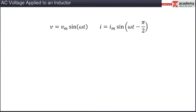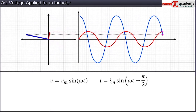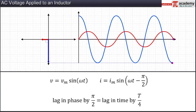On close inspection of the expression derived for the value of current in the circuit, we can see that the current lags voltage by a factor of pi by 2 in phase. The phasor diagrams to analyze the relationship of lead or lag between the current and voltage are shown. The current lags behind the voltage in phase by pi by 2, or in time by one-fourth of the time period T. Another observation is that the maximum value of the current in the circuit is achieved at exactly one-fourth the time period of every cycle.